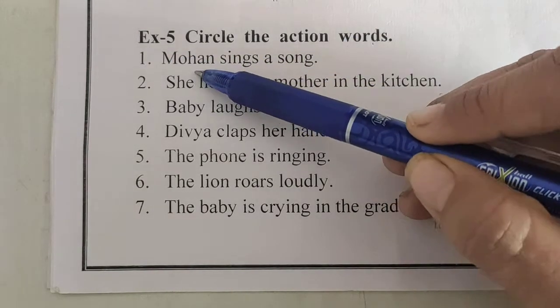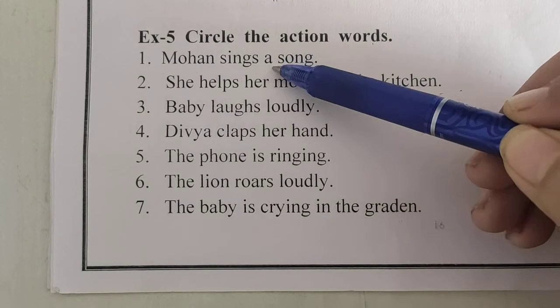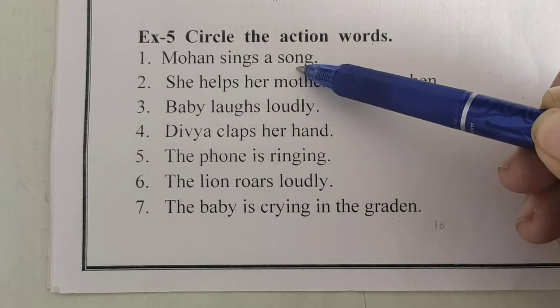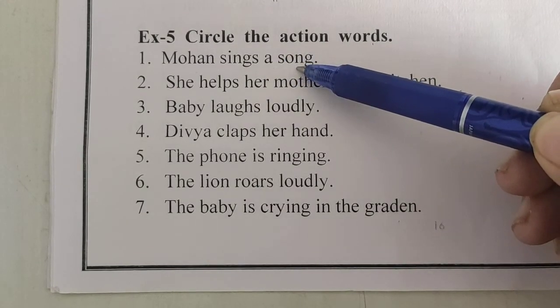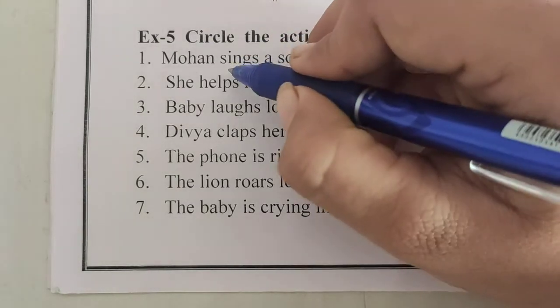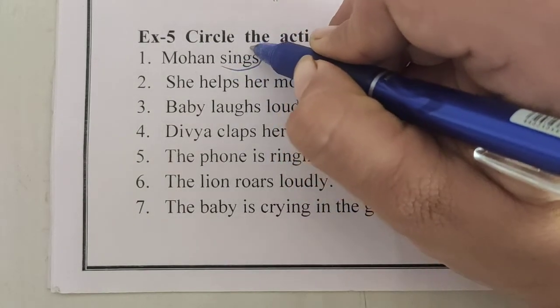First: Mohan sings a song. What activity is performed by Mohan? Mohan sings. So, we have to circle 'sings'.